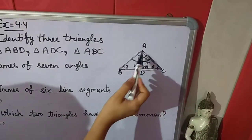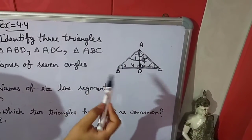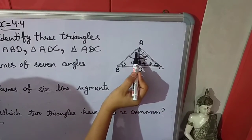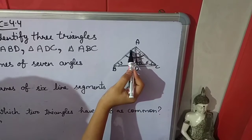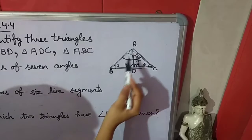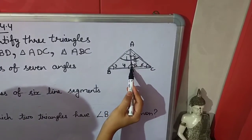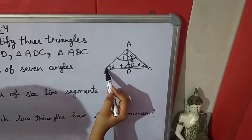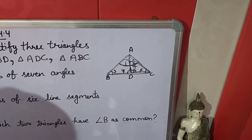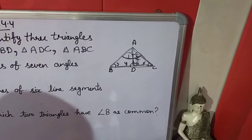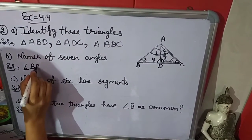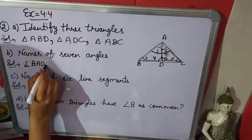Now I will give names to these angles. First is angle 1. We will see the arms of angle 1. One arm is AB and one arm is AD. So angle 1 is angle BAD.